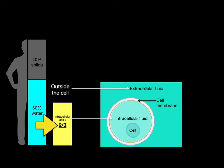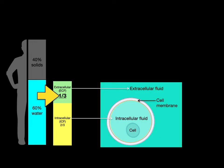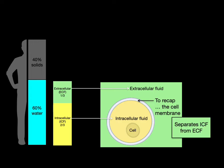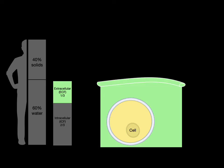So the fluid inside the cell we call intracellular fluid and outside we call extracellular fluid. Intracellular fluid is two-thirds of all the water we have in our body. And the rest, the one-third, is outside the cell. So to recap, this cell membrane separates the intracellular fluid, two-thirds of all of our body water, from the extracellular fluid, the other third.